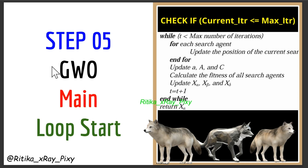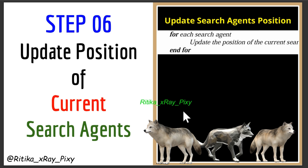Step 5: Main loop. Now the main loop starts. This loop repeats until the maximum number of iterations is reached, and then we display our optimal solution. Step 6: For each search agent, update the position based on alpha, beta, and delta wolf positions.